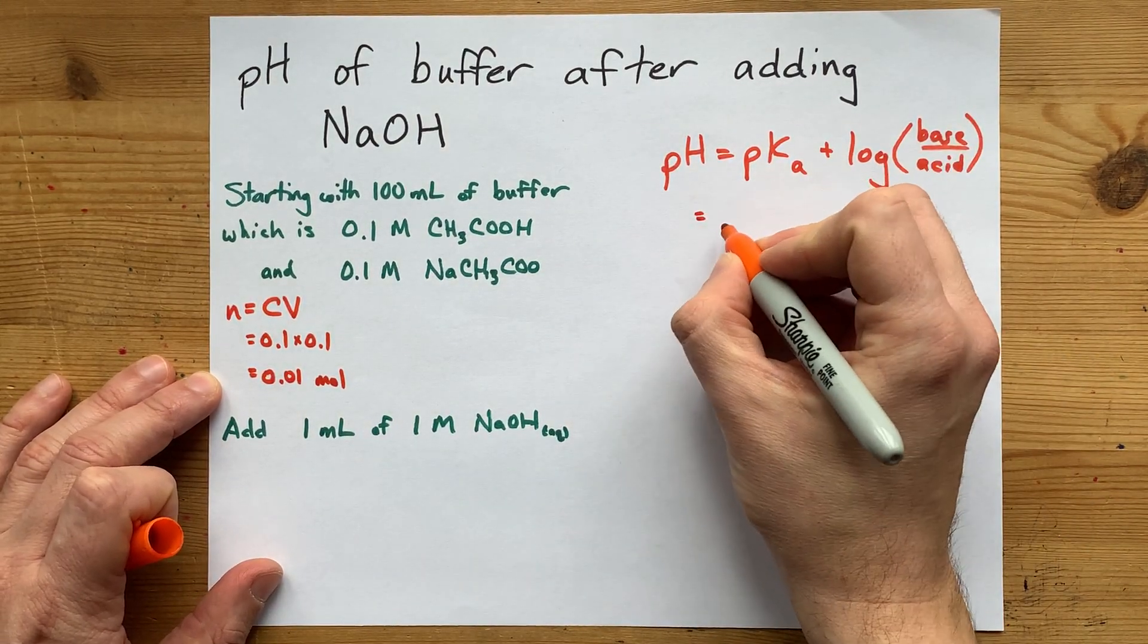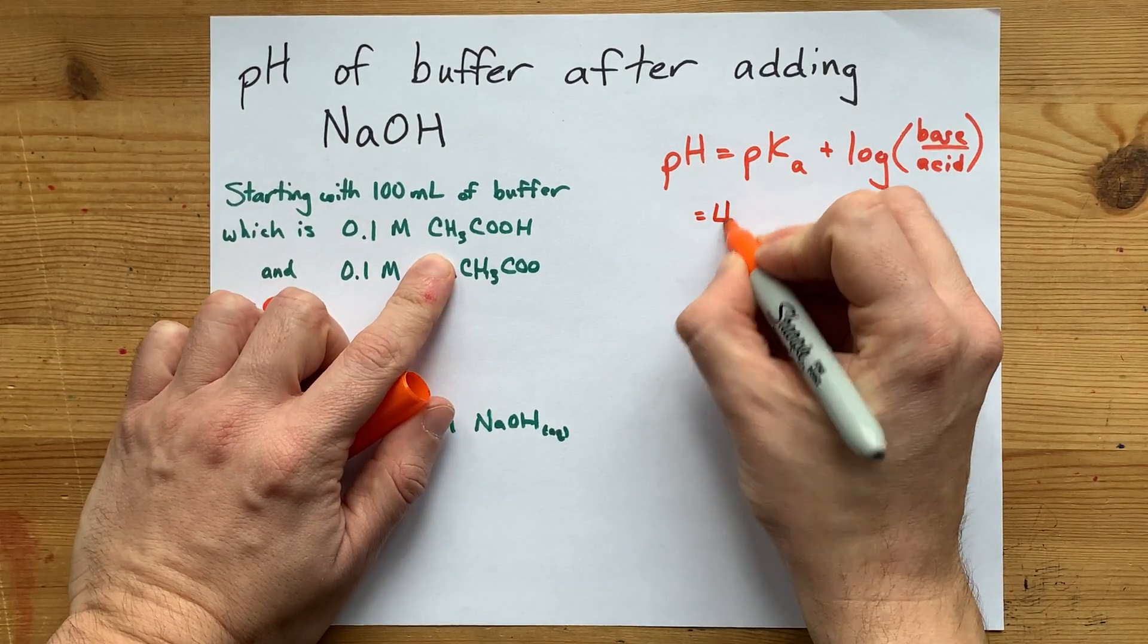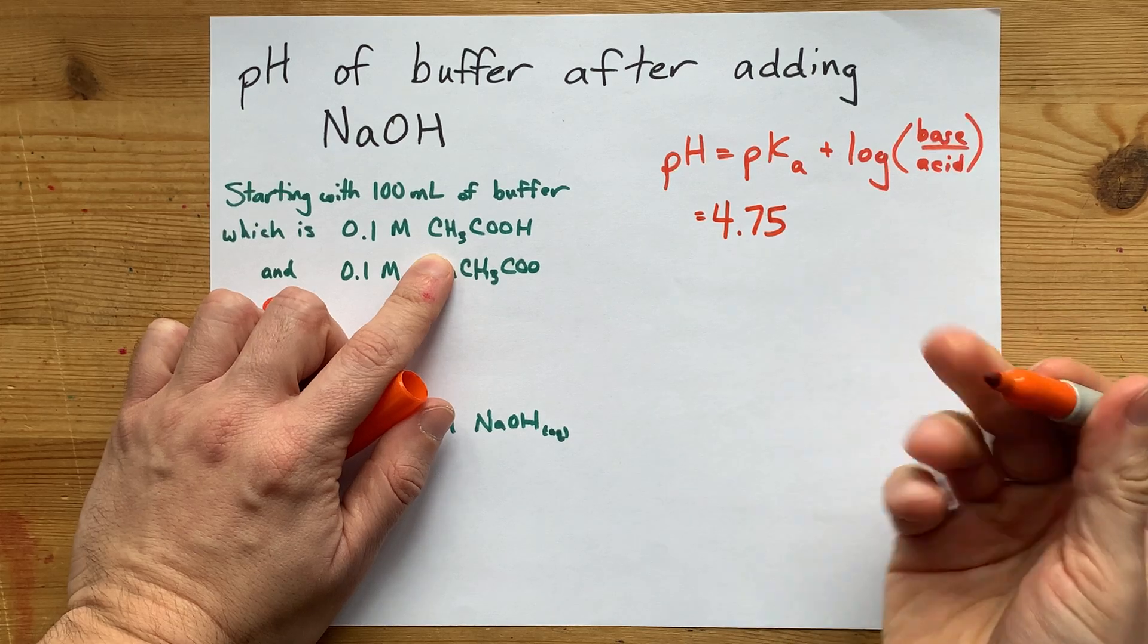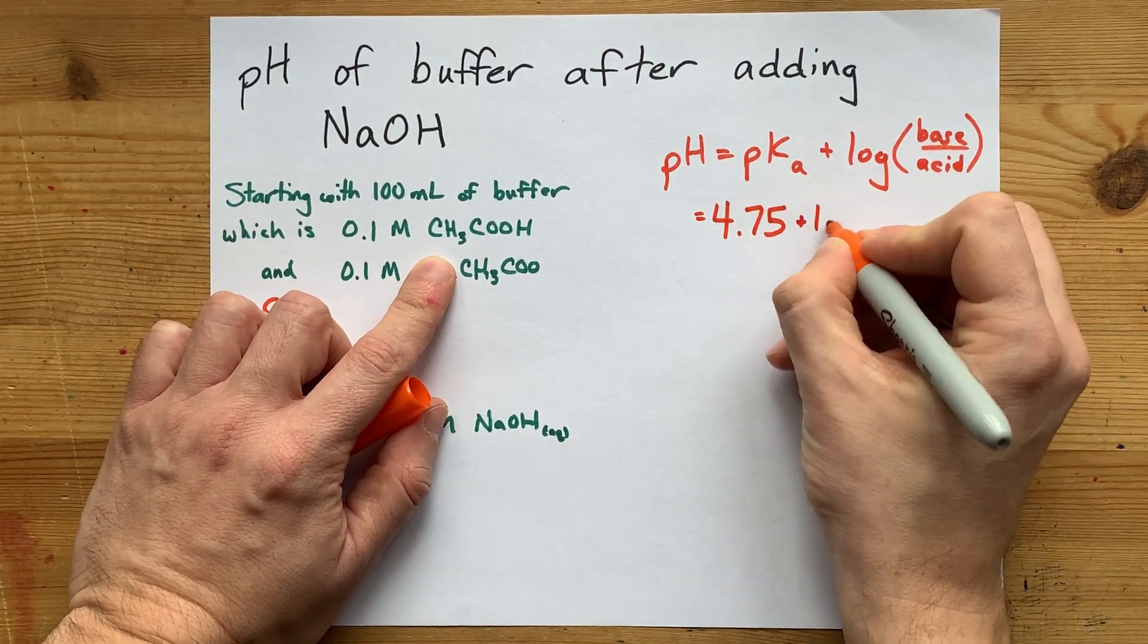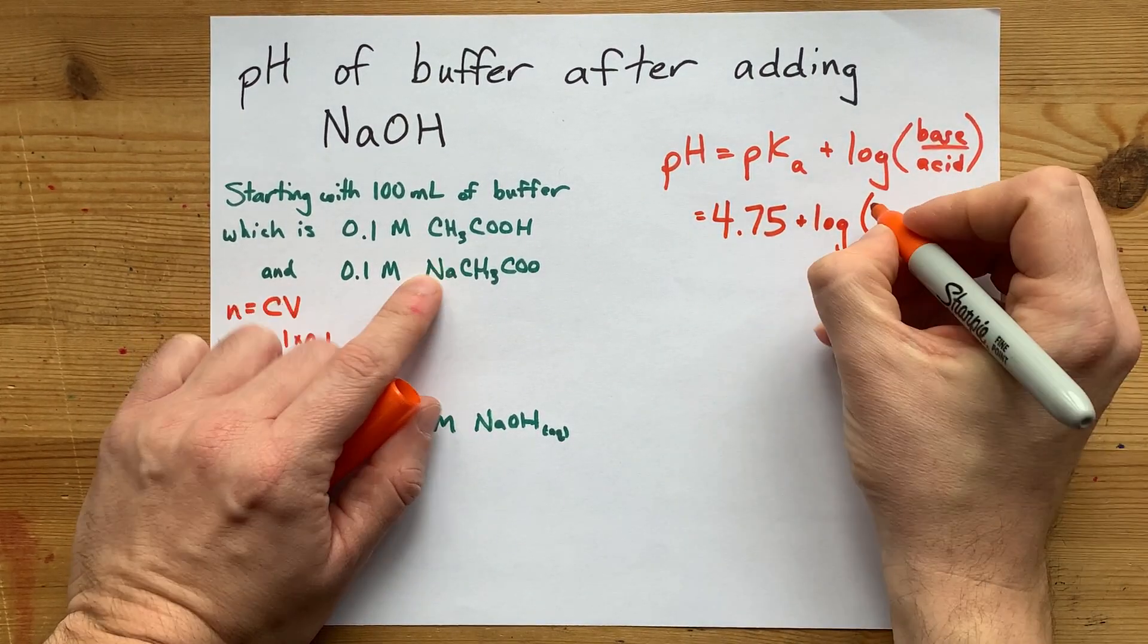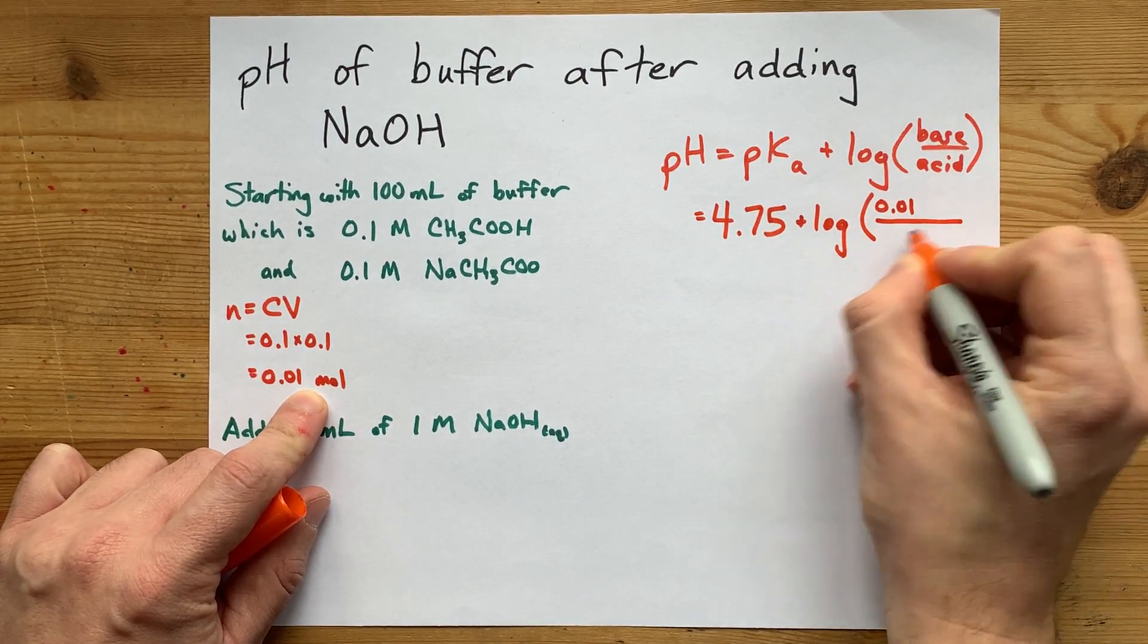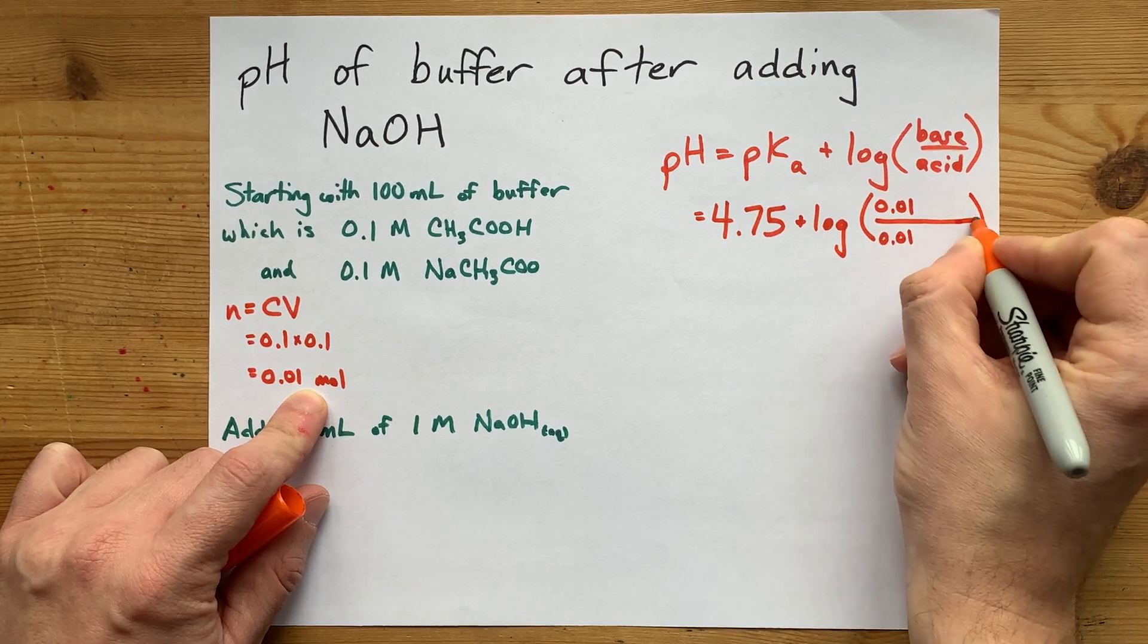And I have 0.1 liters. So that's 0.01 moles of both the acid and the base. The pKa of acetic acid is 4.75. Some people will say 4.76, but that's the same number. Plus the log of, and I'm starting with 0.01 moles of base and 0.01 moles of acid as well.